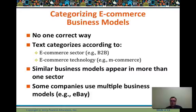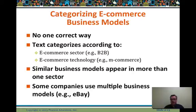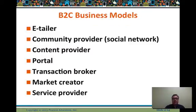Categorizing e-commerce business models — there's no single correct way. There's a variety of approaches: B2B, B2C, mobile commerce. Similar models appear in more than one sector, and some companies use multiple business models. eBay is direct-to-consumer, but also a marketplace, and also a service business for B2B. Amazon operates in a variety of businesses — business-to-consumer is their traditional model, but they've built out such great e-commerce infrastructure that they now sell it through Amazon Web Services.